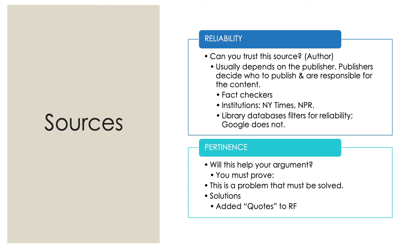The second thing you should be looking for with your sources is: will this help my argument? It might be an amazing source by a great expert with interesting things to say, but if it does not relate to the argument you're trying to make, it's not helpful. The two things you must prove are that this is a problem that must be solved — you have to convince your audience it's an actual problem, not just something that's bothering you — and then you must offer solutions.